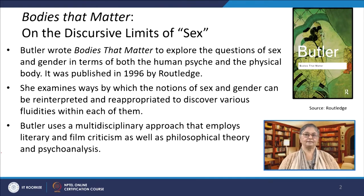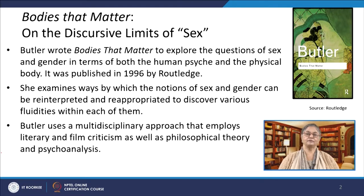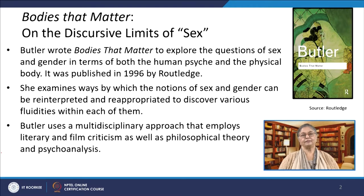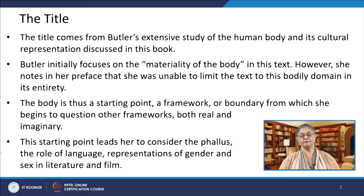Bodies That Matter was published in 1993 by Routledge. Butler has written this book to explore the questions of sex and gender in terms of both the human psyche and the physical body. She examines the ways by which the notions of sex and gender can be reinterpreted and reappropriated to discuss various fluidities within each of them. Butler has used a multidisciplinary approach that employs literary and film criticism as well as philosophical theory and psychoanalysis. Butler places the body at the center to explain the effects of subjectivity, deconstructing the cultural norms which govern the materialization of bodies over time.